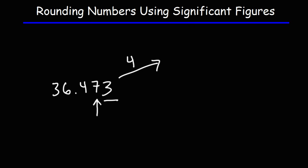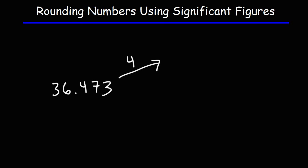If that number is 5 or more, we're going to round this number up. If it's 4 or less, we're going to round this number down, or keep it at a 7. So 3 is not 5 or more, so we're going to round this number down. This is going to be 36.47. As you can see, we have four significant figures.